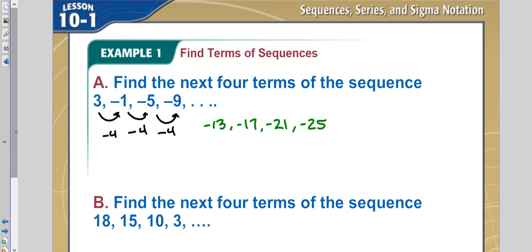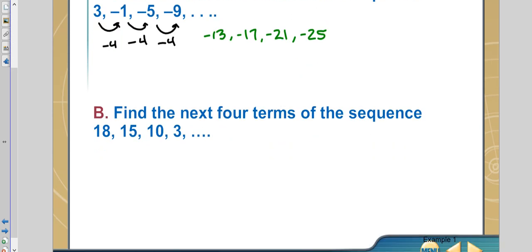All right, now let's look at part B. Let's find the next ones of this sequence. Here, it looks like we're subtracting by three every time. No, wait. This one's subtracting by five. No, wait. This one's subtracting by seven. Well, as you can see, this time it's not doing exactly the same thing, but we can see the pattern.